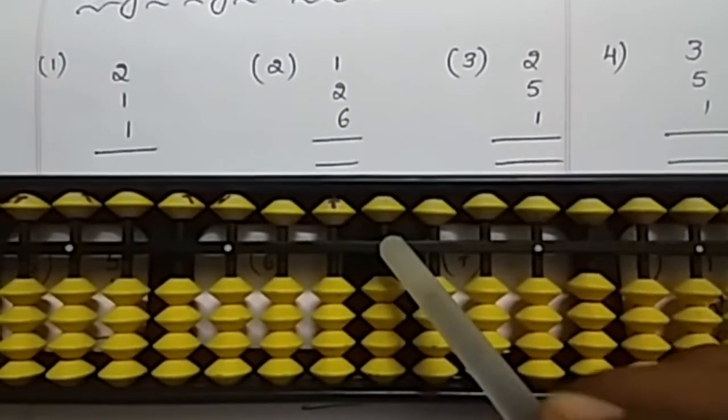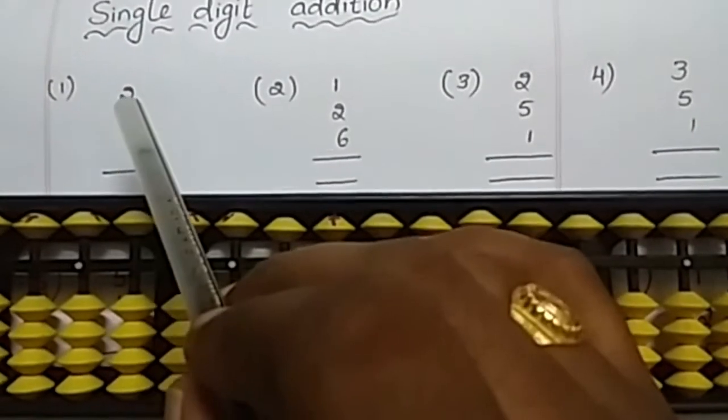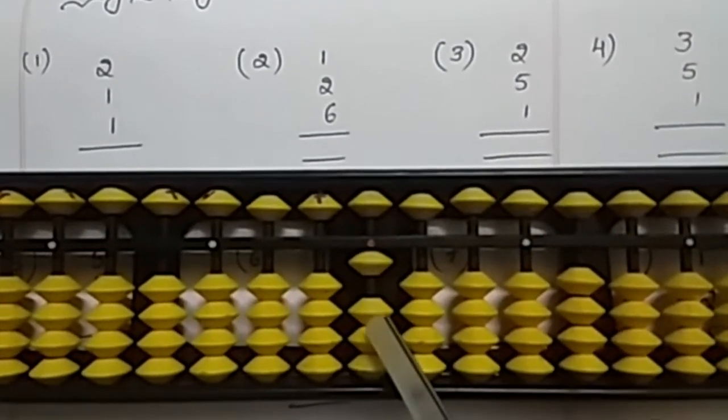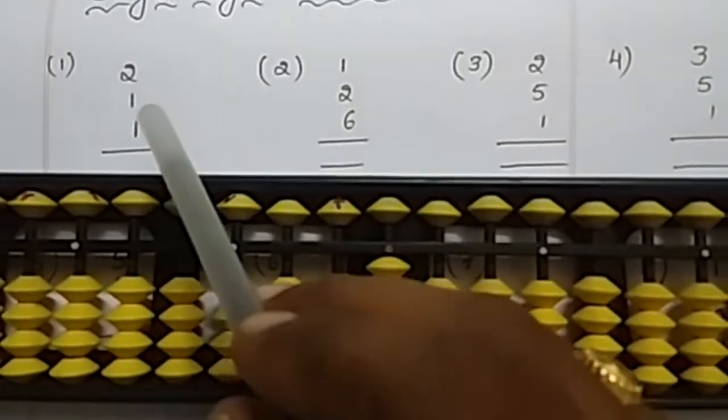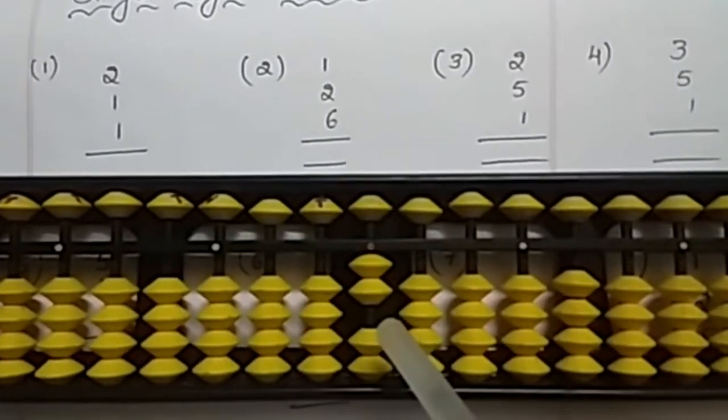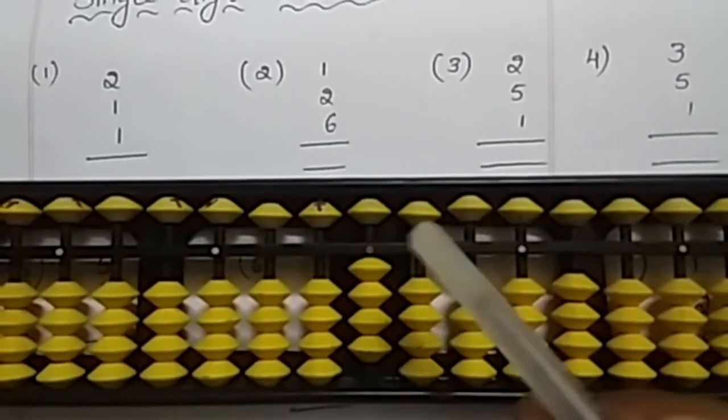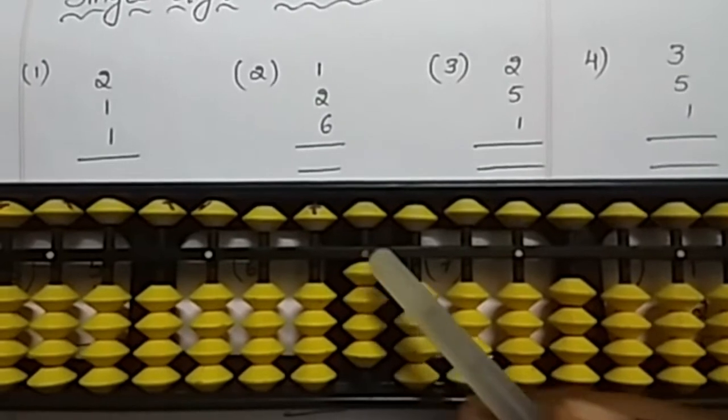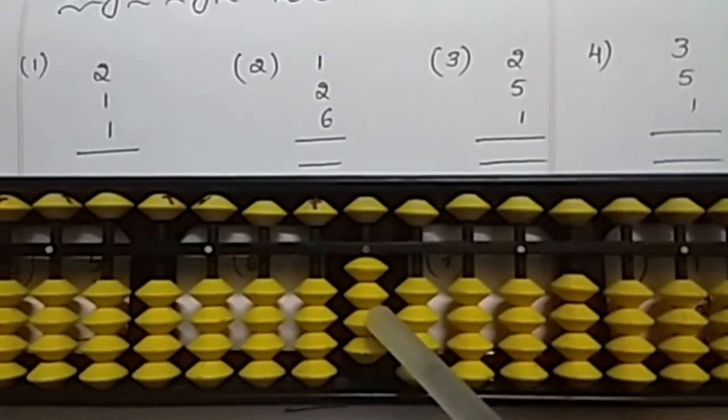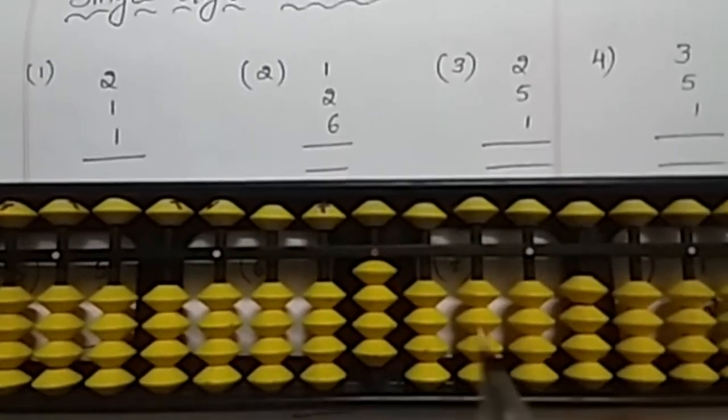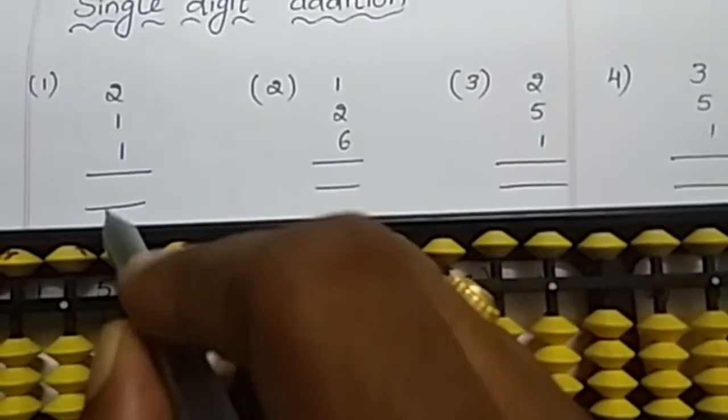This is 2, 1, 2, again 1, again 1. What is the total? 1, 2, 3, 4. So here the answer is 4.